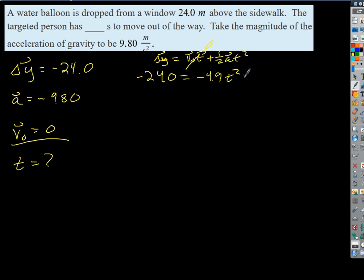So negative 24 equals 0 minus 4.9 t squared, right? So if I push this over to the other side, we get 4.9 t squared minus 24.0 equals 0, right?